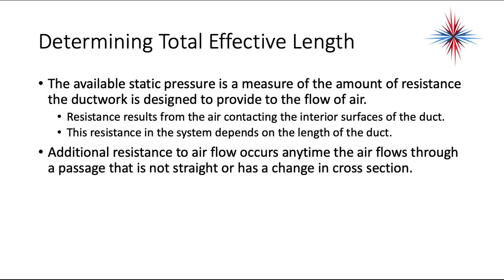The available static pressure is a measure of the resistance the ductwork is designed to provide to airflow. Resistance results from air contacting the interior surfaces of the duct, and depends on the length and type of duct. Additional resistance to airflow occurs whenever air flows through a passage that is not straight or has a change in cross section — for example, through a 90-degree elbow, a reducer, or even a 45-degree elbow. Every fitting will have a pressure loss.